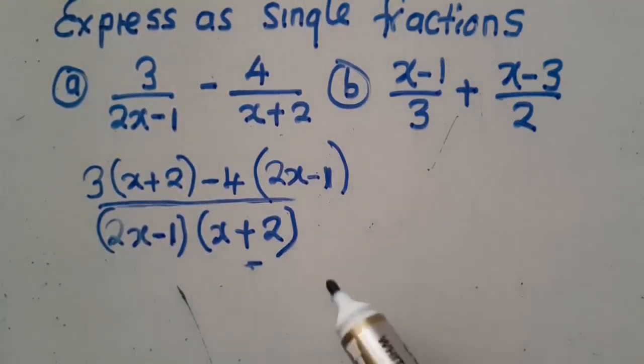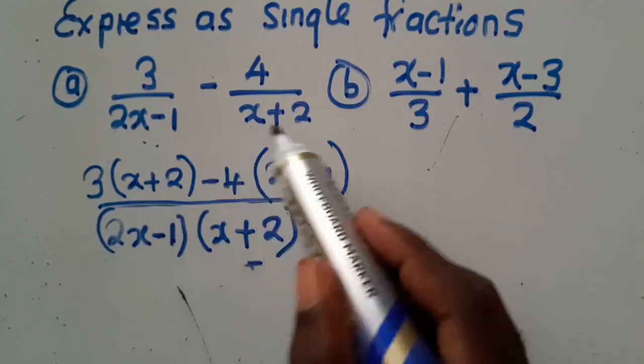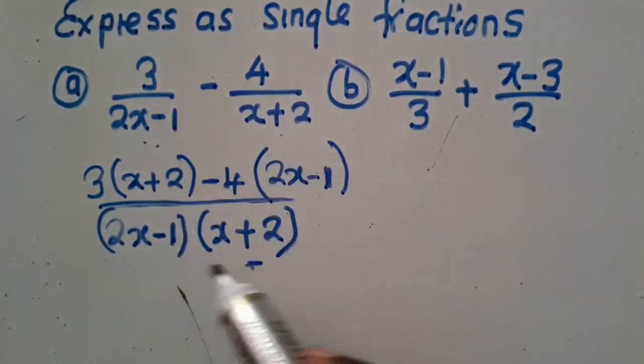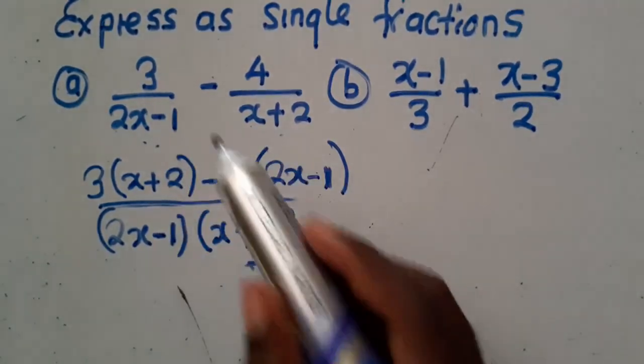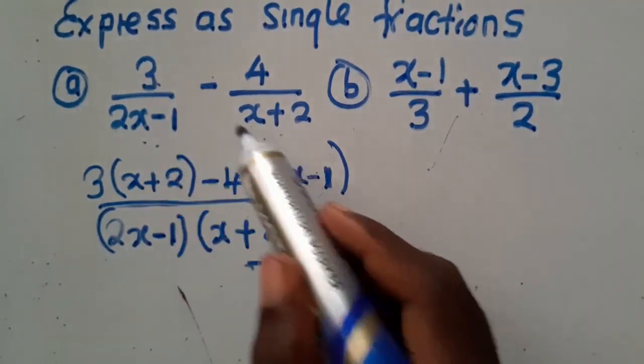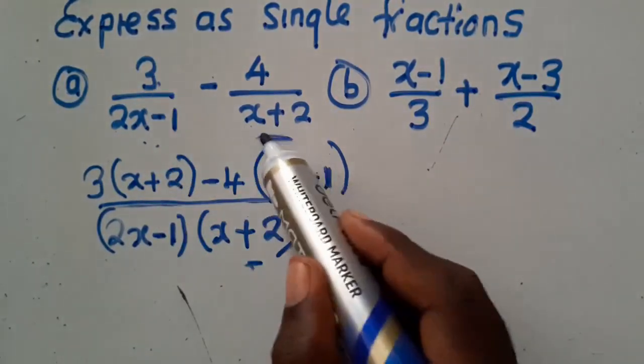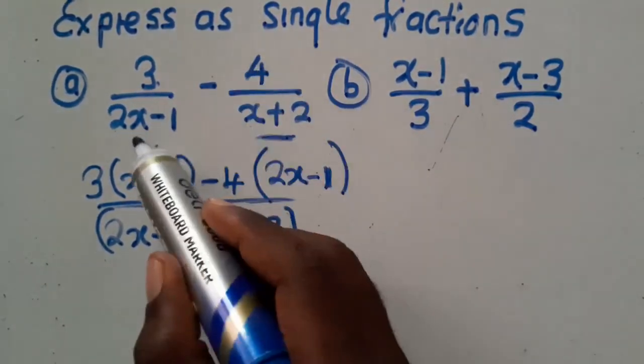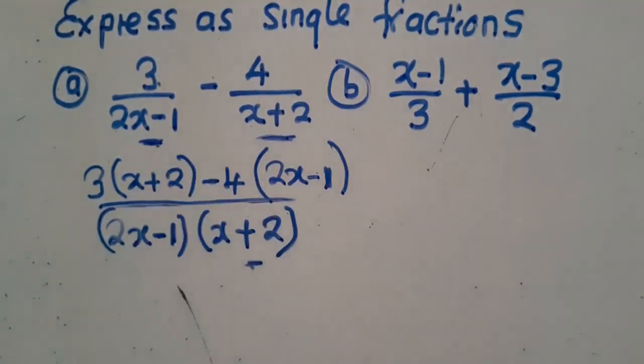Some people will tell you that when you just find the common denominator, which is these two, you bring them down. Then you start with this. You cross multiply. 3 is going with that one, 4 is going with that one. This is what I have just done. So if you are used that way, you can be going that way. But it is better you understand like this.